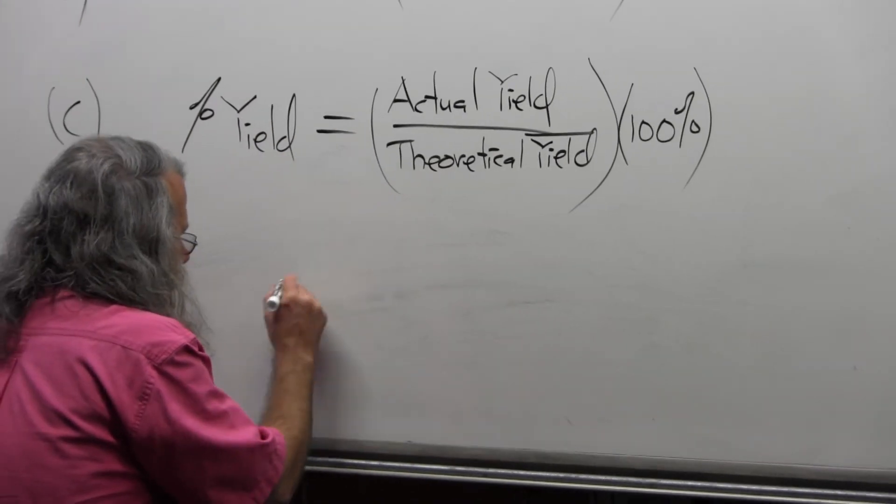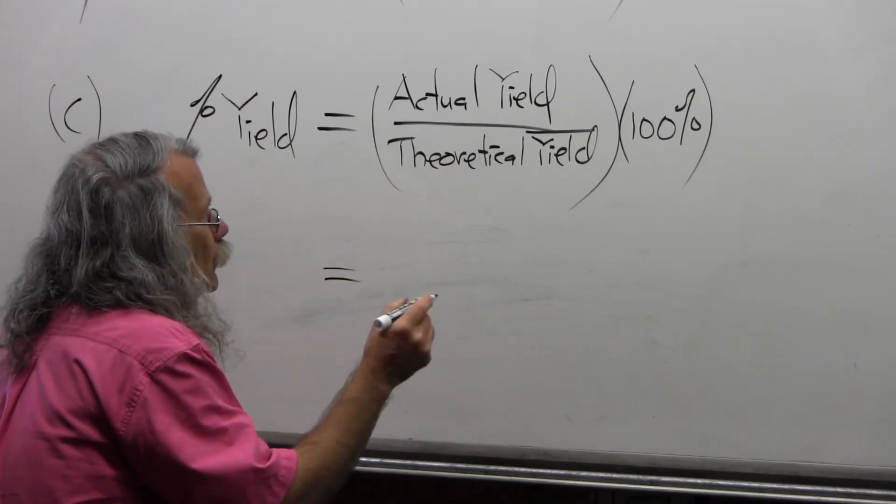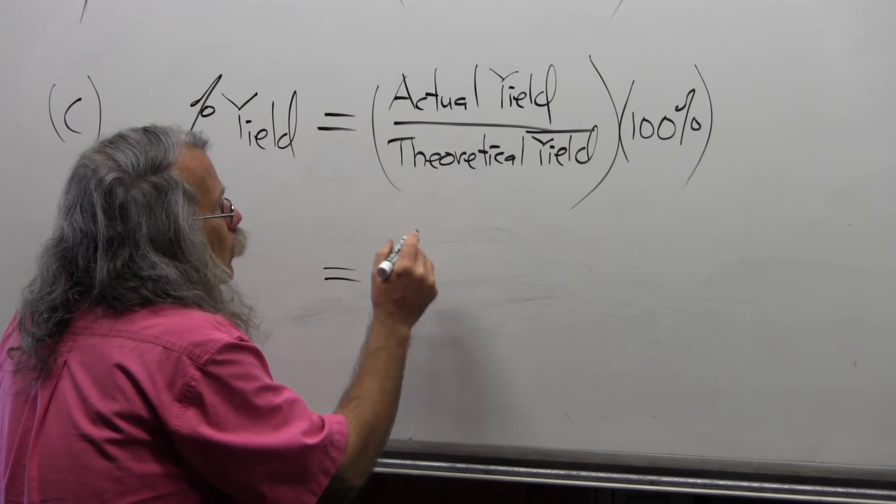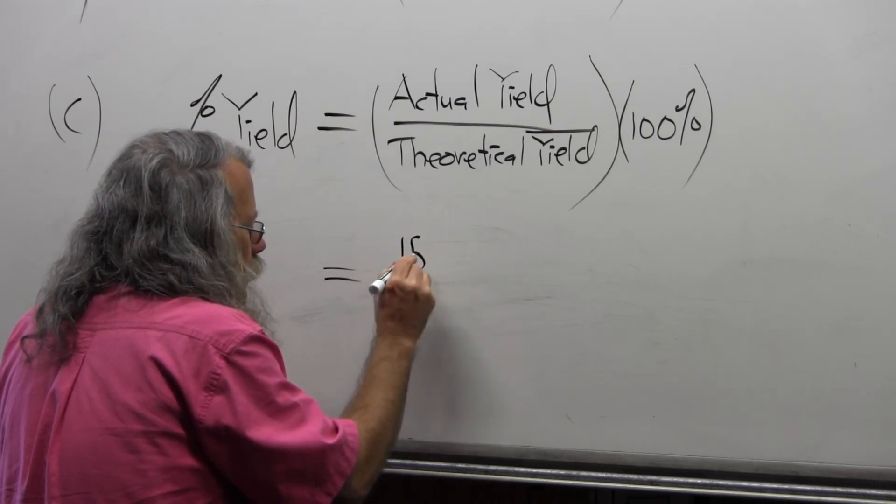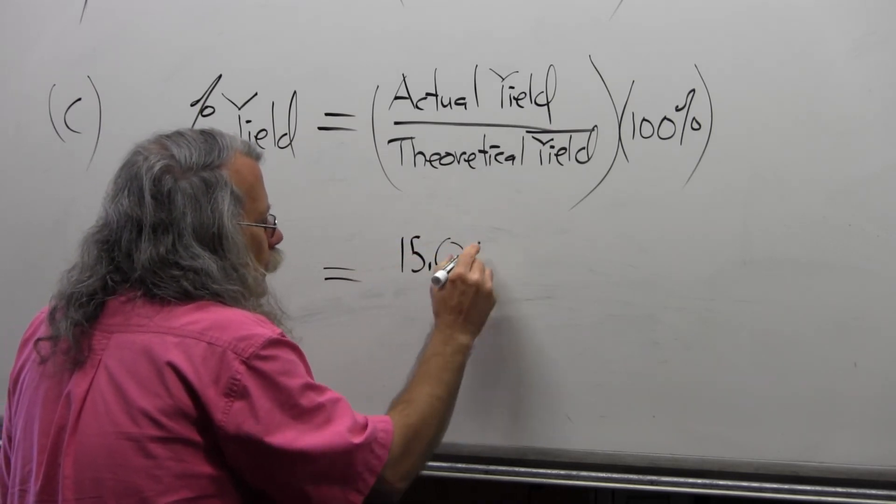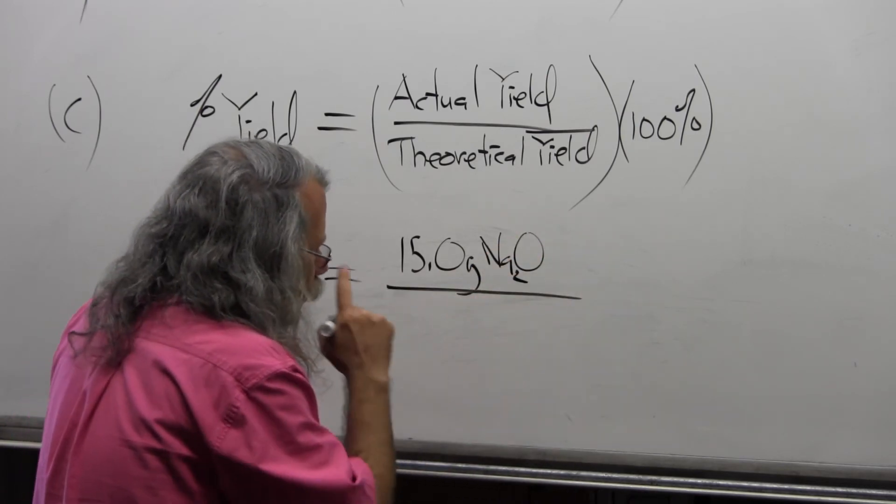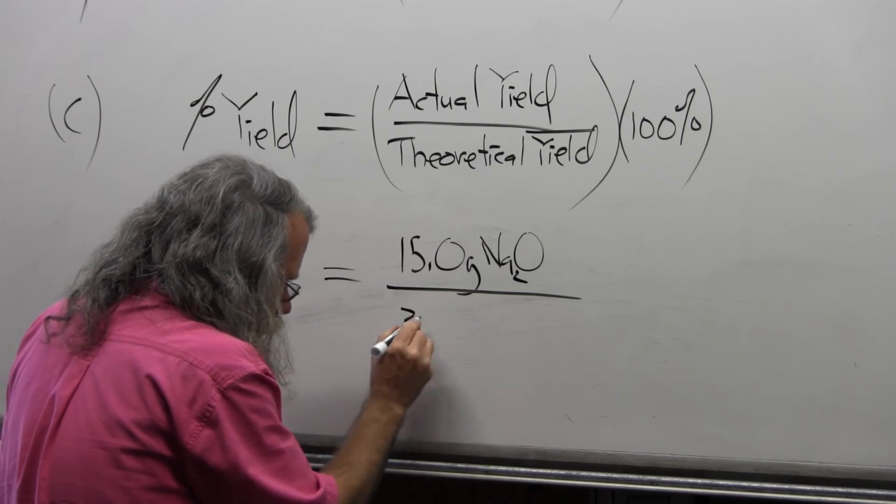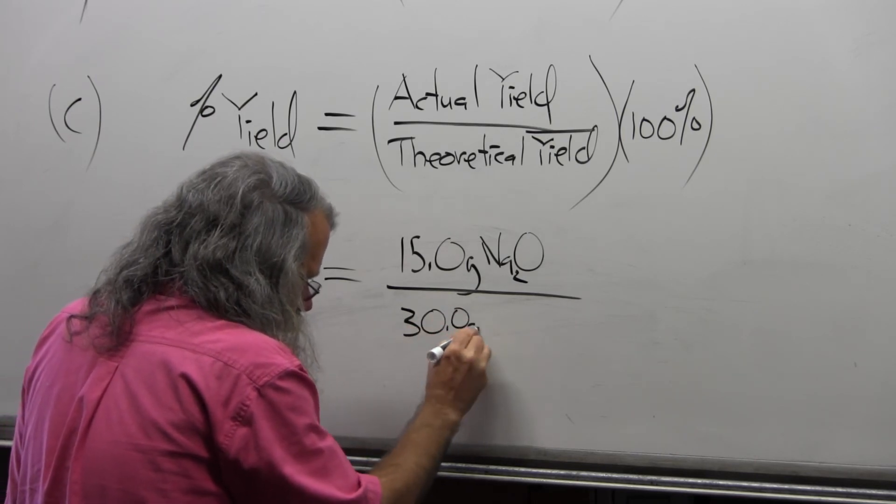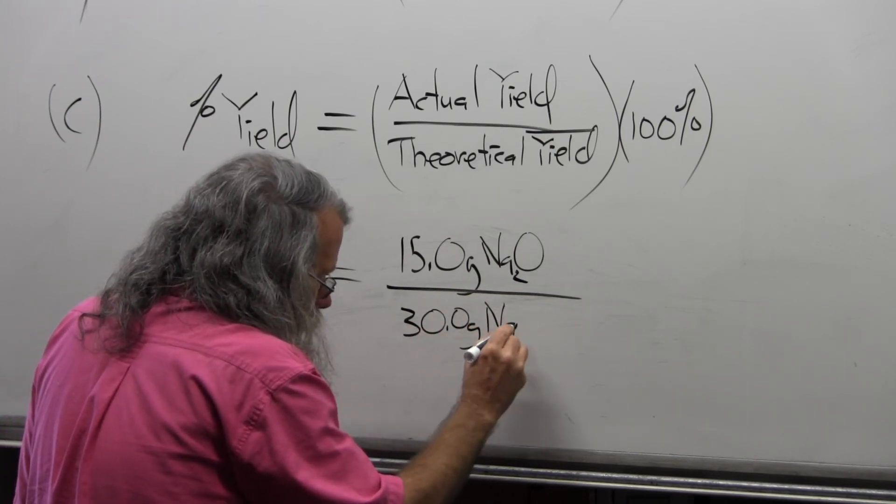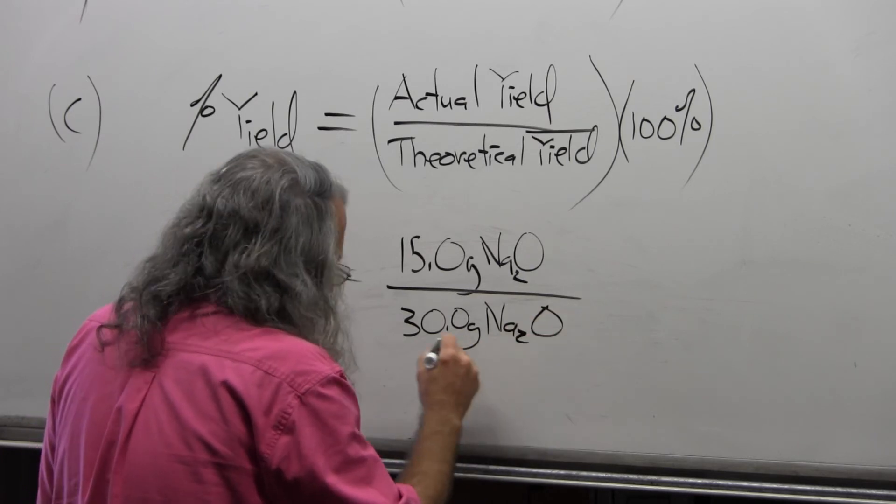And so that means that this is going to be equal to 15.0 grams of sodium oxide in the numerator and 30 grams of sodium oxide in the denominator.